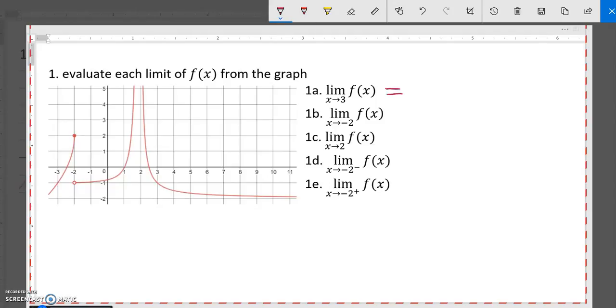So this first one, the limit as x approaches 3. So here's 3. As f of x is getting closer and closer to 3, it looks to me like this is getting closer and closer to negative 1. So that's going to be a negative 1.